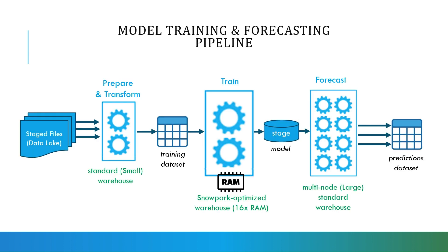Another diagram is focused on the kinds of warehouses you may use at every step. Starting with data ingestion from stage files or a data lake, there is a prepare-and-transform step that is usually outside of the typical model training and serving pipeline. For this step, you may use standard small warehouses, but you can also take advantage of the parallelism in the COPY INTO command. It's good practice to split up your files in the staged directory so data can be loaded in parallel into the training dataset.